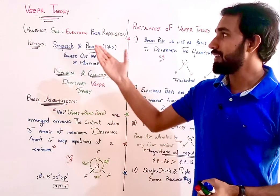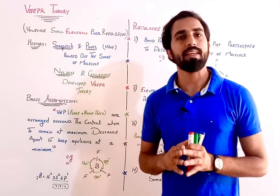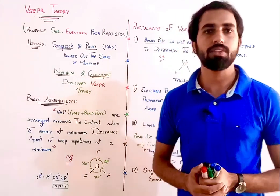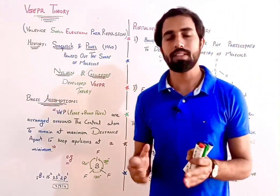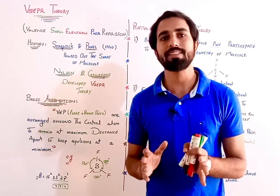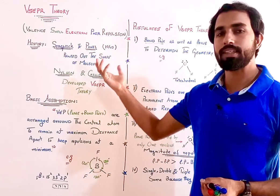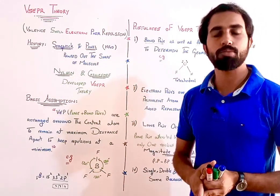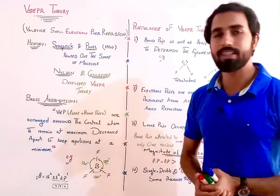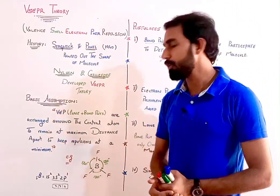तो guys, जो Valence Shell Electron Pair Repulsion है, basically यह होती क्या है — किसी भी atom में उसके जो valence shell होगा, उसमें कोई polyvalent atom है, और उसके valence shell में जो electrons हैं, वो electrons की वजह से जो bond बनेंगे — अब bond वो lone pair है या bond pair है, इन दोनों का concept इस theory में मौजूद है। अब valence shell के जो electrons हैं, उनकी base के ऊपर कोई molecule बनेगा, तो उस molecule की shape क्या होगी — basically उसके बारे में आज हम discuss करेंगे। तो इसका जो basic assumption है VSEPR theory का, उसको पहले हम थोड़ा सा discuss करते हैं।